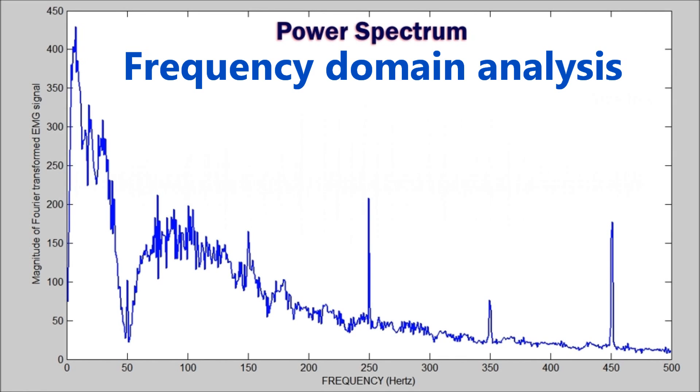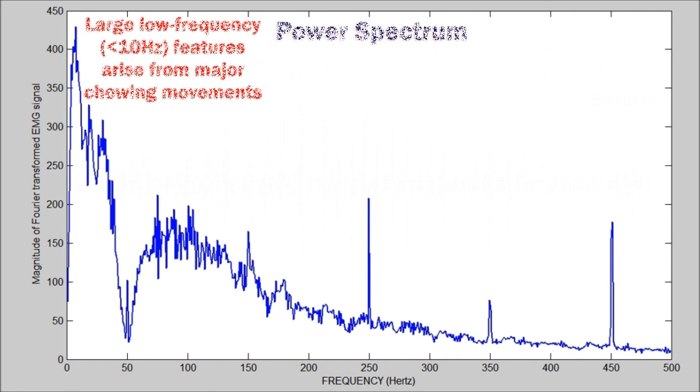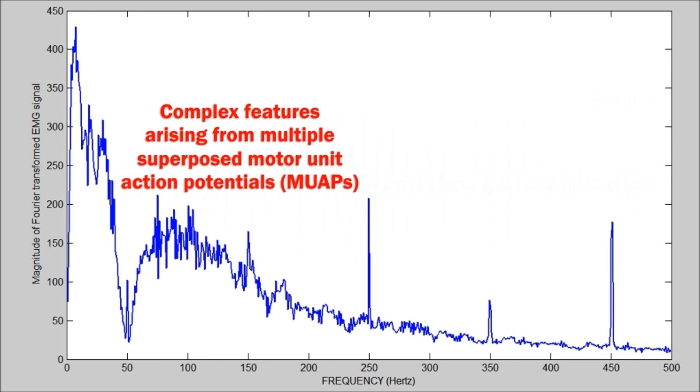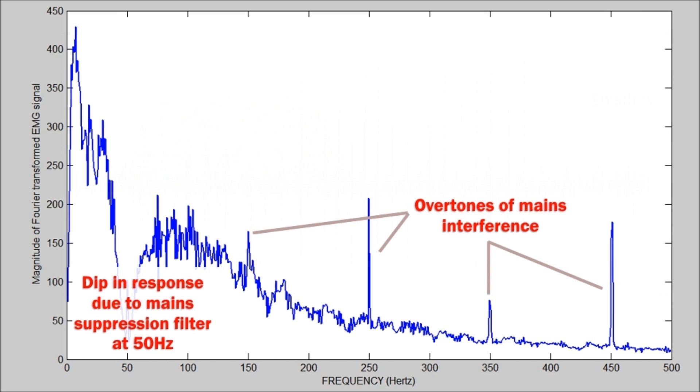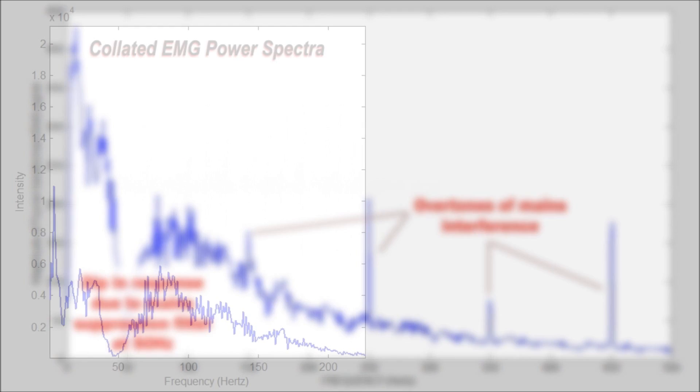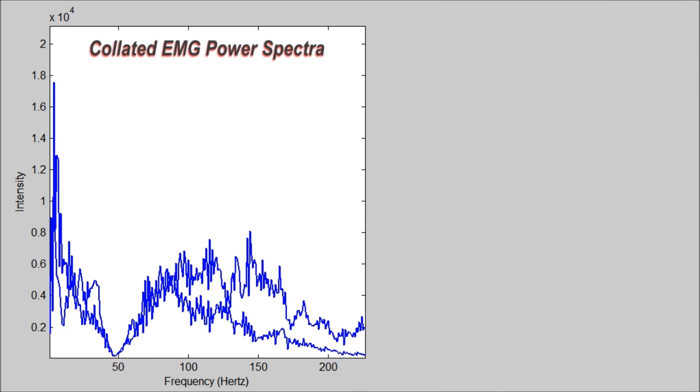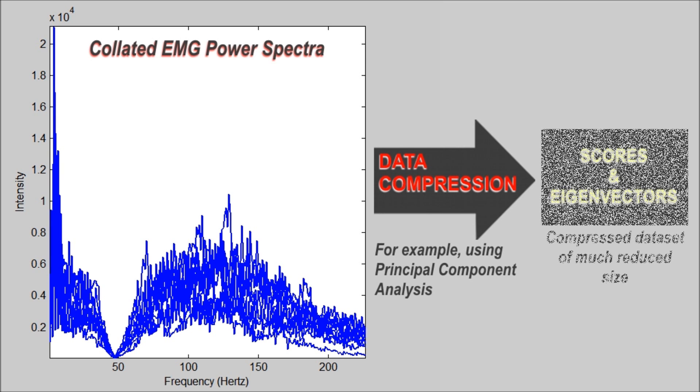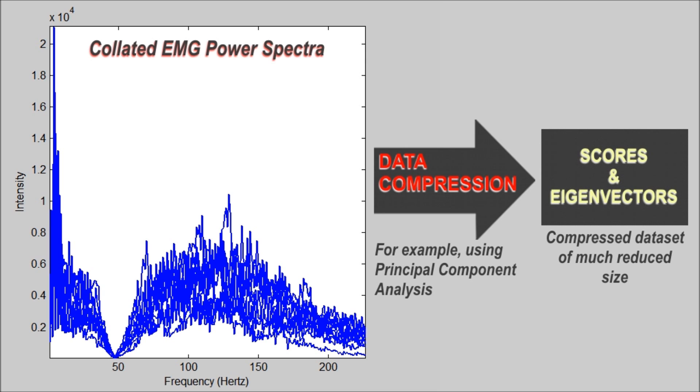A less reductive approach is to Fourier transform the signals into the frequency domain. Here, individual constituents of the power spectrum can be examined. The spectra can be treated collectively with a data compression method such as principal component analysis. This reduces dataset size and complexity whilst retaining most of the original information.